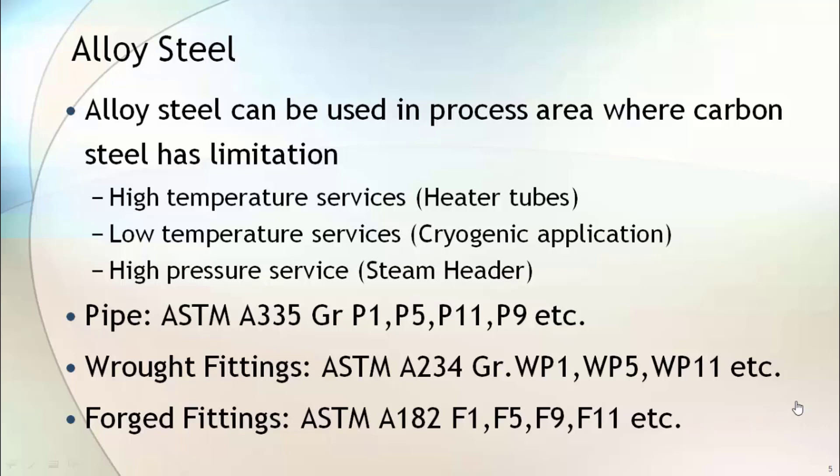Common alloy steel grades used in piping are: for pipe, ASTM A335 grades P1, P5, and P11; for wrought products, ASTM A234 grades WP1 and WP5; for forged fittings, ASTM A182 grades F21, F5, F9, F11, etc.